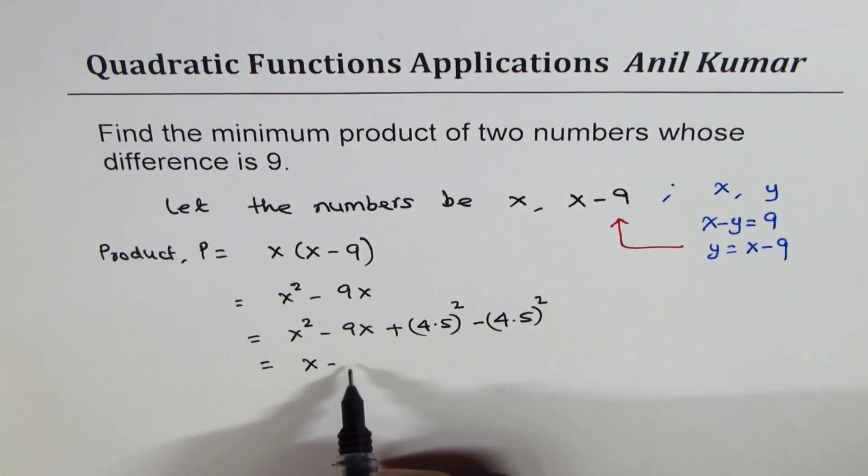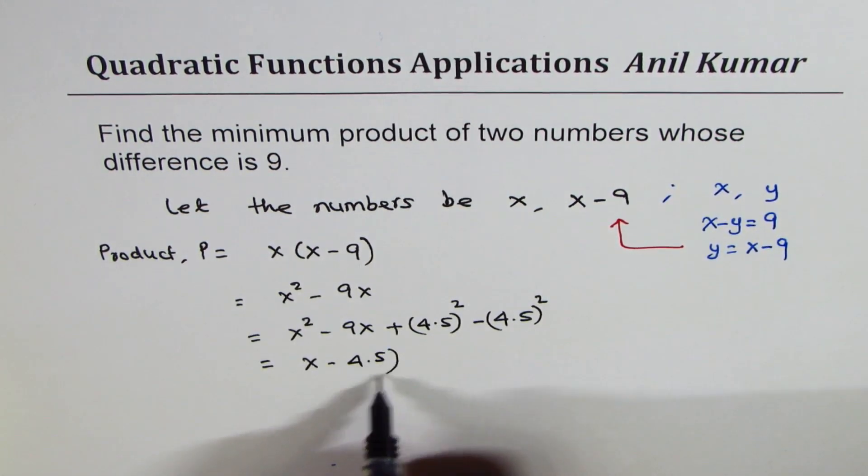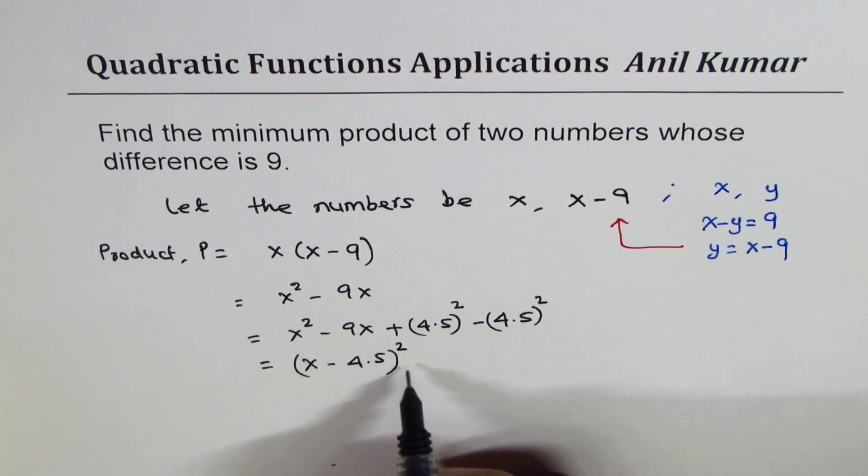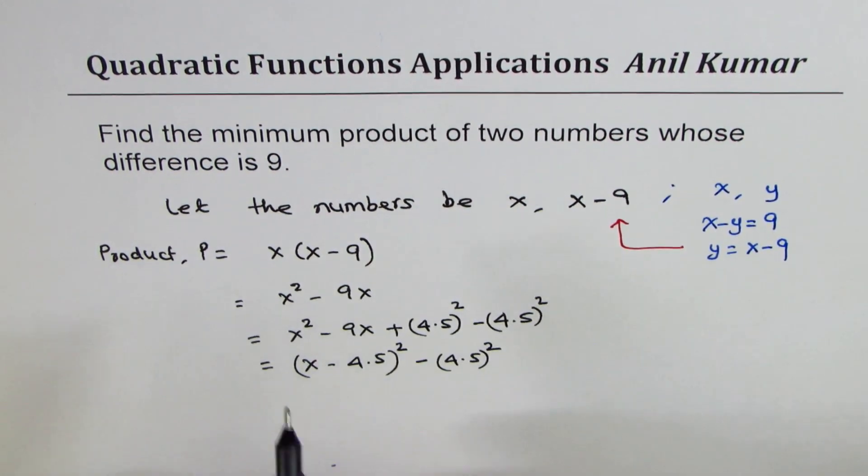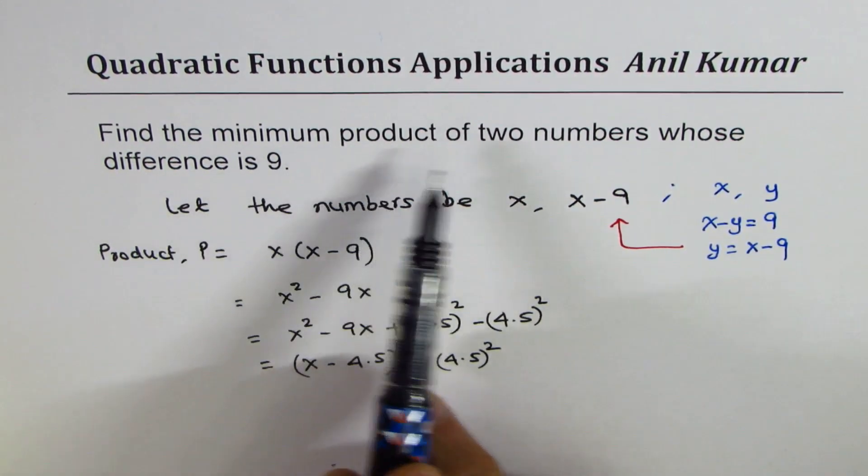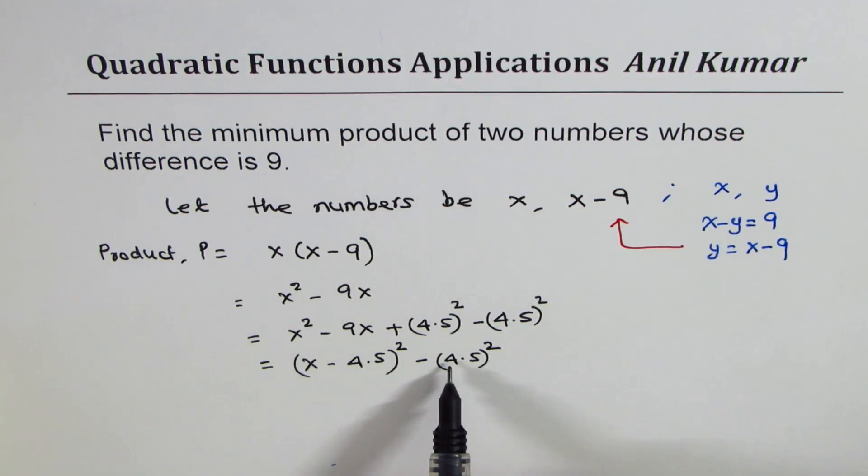These three become perfect squares, you could write them as X minus 4.5 whole square and here we get minus 4.5 whole square. We need to find the minimum product of two numbers, that means we are interested in minus 4.5 whole square.